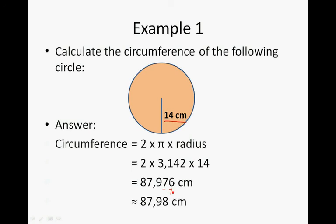And because that is larger than 5, the 7 turns into an 8. So if you have a circle with a radius of 14 centimeters, the circumference is 87.98 centimeters.